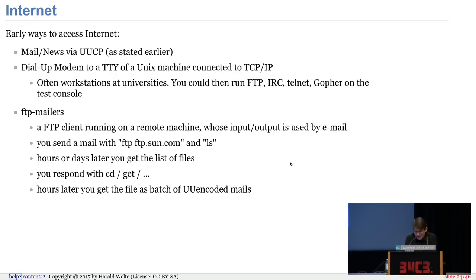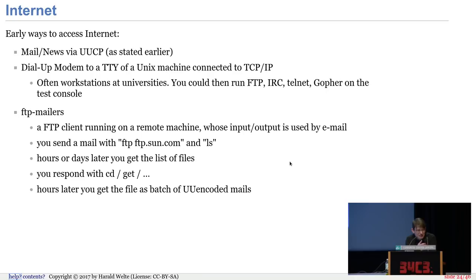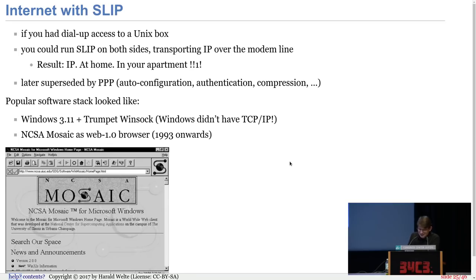I was too young for university, so I had to use FTP mailers. An FTP mailer is basically some FTP client that runs on a remote machine connected to the internet with email access, and you control it input/output over email. If you want to FTP to some server, you send an email saying FTP to the server with an LS command. Hours later you get back the file listing. Then you CD into a directory, and finally issue a get command and receive a long series of UUEncoded mails. UUEncode is a method of sending binary 8-bit messages over mail before MIME existed. Hours or days later you got that — and it worked perfectly fine.